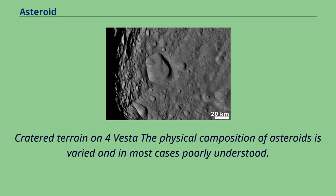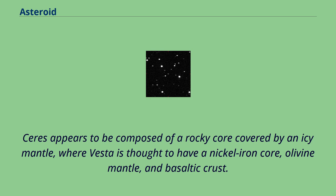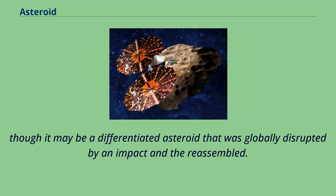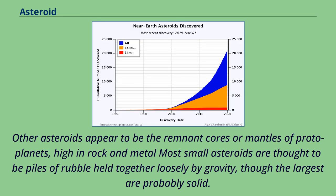The physical composition of asteroids is varied and in most cases poorly understood. Ceres appears to be composed of a rocky core covered by an icy mantle, where Vesta is thought to have a nickel-iron core, olivine mantle, and basaltic crust. Ten Hygieia, however, which appears to have a uniformly primitive composition of carbonaceous chondrite, is thought to be the largest undifferentiated asteroid, though it may be a differentiated asteroid that was globally disrupted by an impact and then reassembled. Other asteroids appear to be the remnant cores or mantles of protoplanets, high in rock and metal. Most small asteroids are thought to be piles of rubble held together loosely by gravity, though the largest are probably solid.